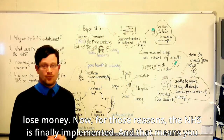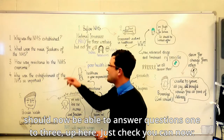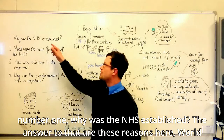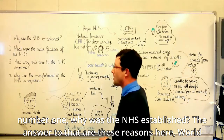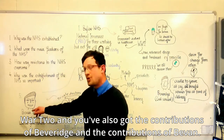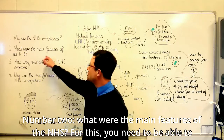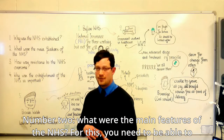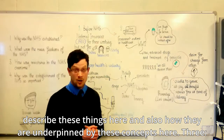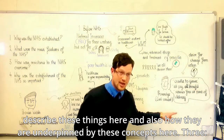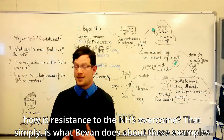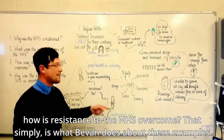For those reasons, the NHS was finally implemented, and you should now be able to answer questions one to three. Why was the NHS established? The answers are World War II, the contributions of Beveridge, and the contributions of Bevan. What were the main features of the NHS? You need to describe those features and how they are underpinned by Beveridge's concepts. How was resistance to the NHS overcome? That is simply what Bevan did about each example of resistance.